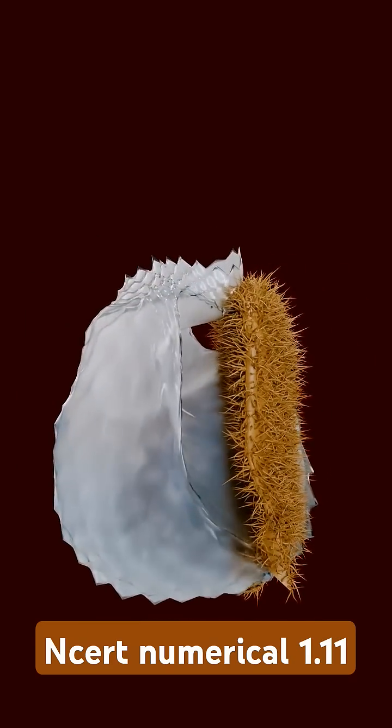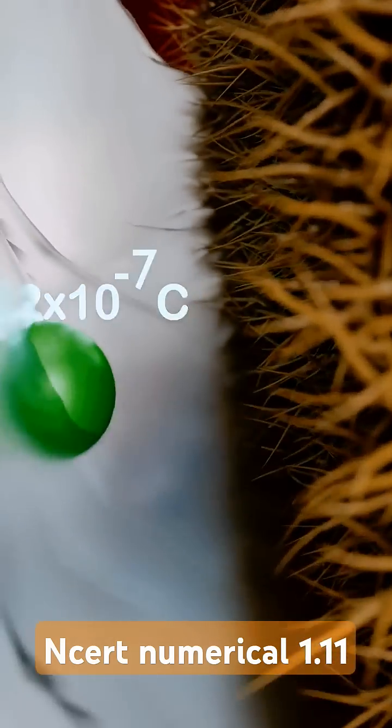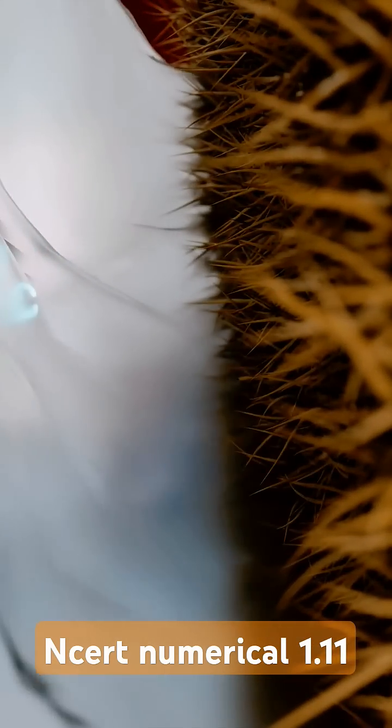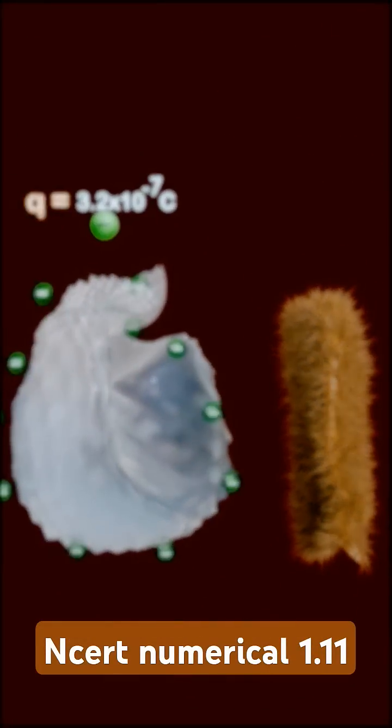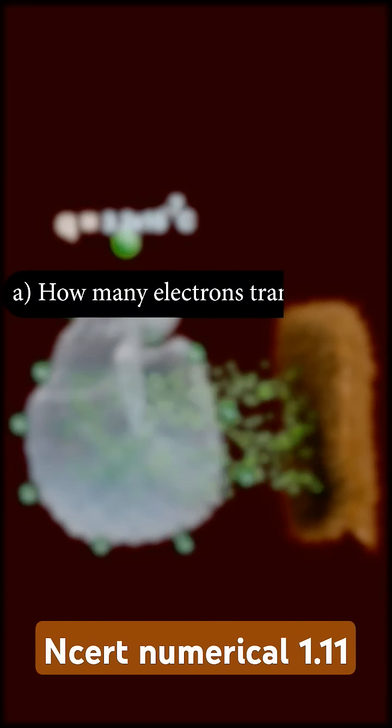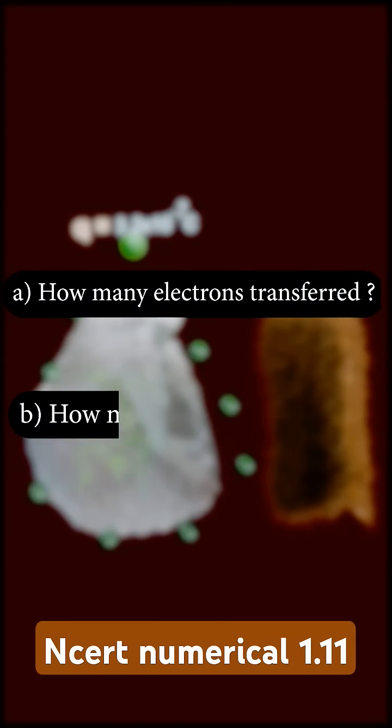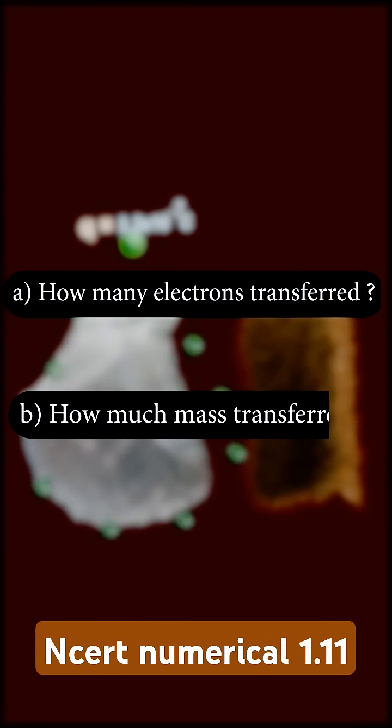You rub a piece of polythene with wool and it gets a negative charge of 3 into 10 to the power minus 7 coulomb. Now let's crack two mysteries. A. How many electrons have jumped from wool to polythene? B. Did mass also sneak its way from wool to polythene?